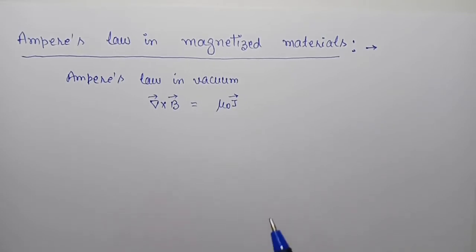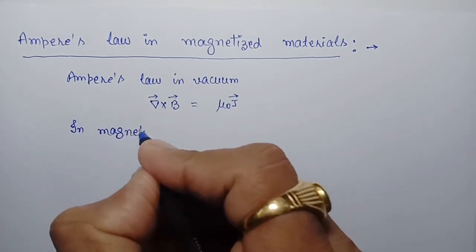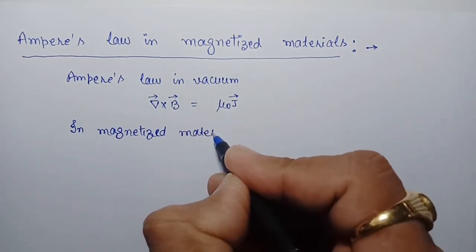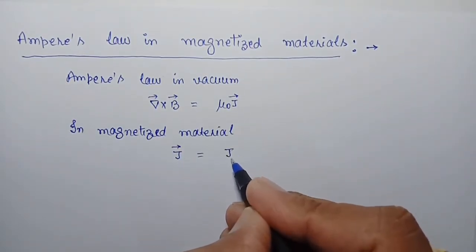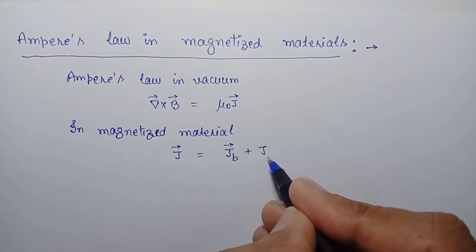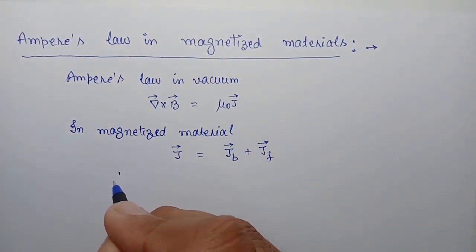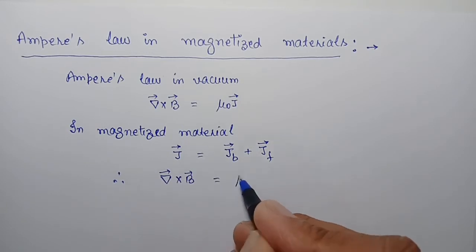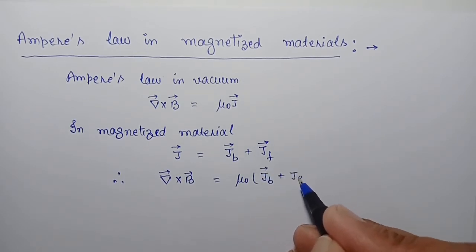Here j is the volume current density, but in magnetized material this volume current density equals the sum of bound current plus free current. So we can write the above equation as: curl of magnetic field equals mu naught times (j_b plus j_f), that is bound current plus free current.